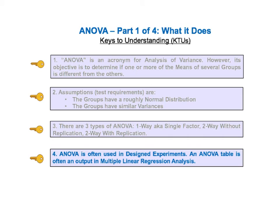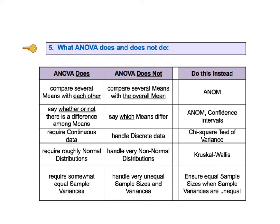The fourth KTU is that ANOVA is often used in designed experiments, and an ANOVA table is often an output in multiple linear regression analysis. In the fifth and final key to understanding, we'll explain what ANOVA does and does not do using this table.